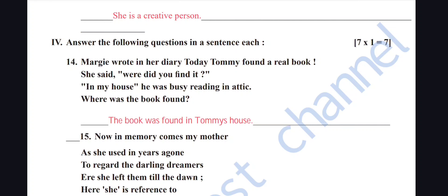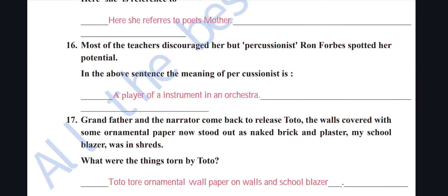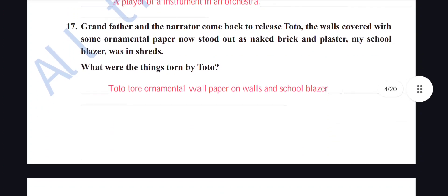Answer in a sentence each: Margie wrote in her diary — Tommy found a real book. Where was the book found? The book was found in the attic in Tommy's house. In the poem, 'here she' refers to the poet's mother. In the sentence about percussionist Ron Frobbs — the meaning of 'percussionist' is a player of an instrument in an orchestra.